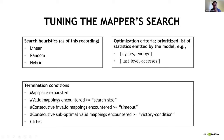Termination conditions are also configurable: map space exhaustion (the mapper searched the entire space, confirming the optimal mapping), a fixed number of mappings evaluated, a timeout after a certain number of consecutive invalid mappings, a patience condition after no improvement for a long time, or a manual Control-C which causes the mapper to end gracefully, clean up, and dump all statistics and output.